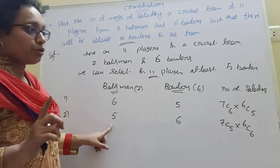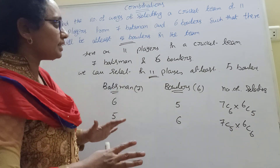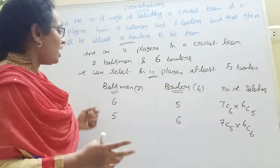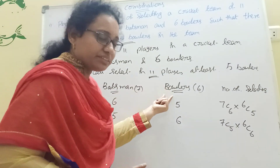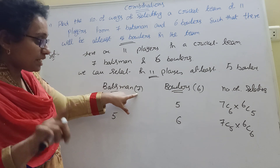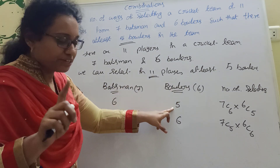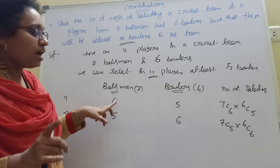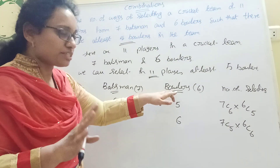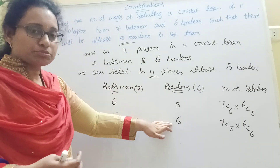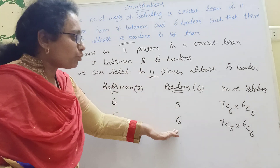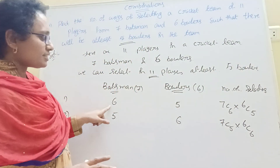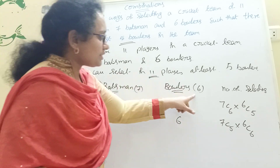Let me explain again in English. There are 7 batsmen and 6 bowlers. We select at least 5 bowlers, so we start from 5. There are two cases. The number of selecting is 7C6 into 6C5 plus 7C5 into 6C6. Now we apply the formula NCR equal to NC(N minus R) to simplify. 7C6 becomes 7C1, and 6C5 becomes 6C1.